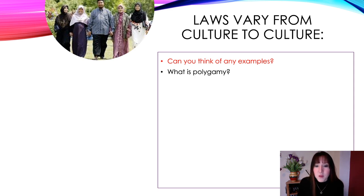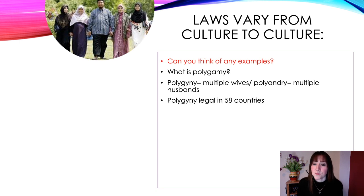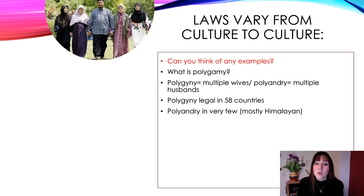One example is polygamy. Do you know what polygamy is? Poly means more than one, so polygamy means more than one — normally more than one wife, but it could mean more than one husband. Polygamy means multiple wives, and polyandry is multiple husbands. Polygamy is legal in 58 countries, while polyandry is in very, very few — mainly the Himalayan cultures.